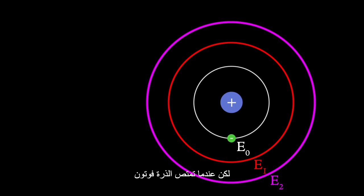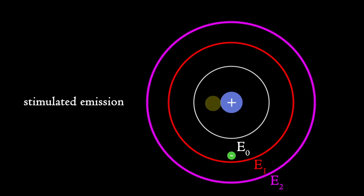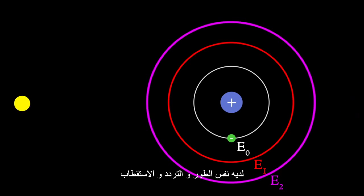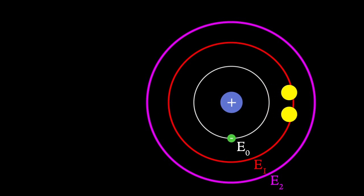But when an atom absorbs a photon and after a short time another photon is absorbed, a stimulated emission will be the result. The newly created photon has the same phase, frequency, polarization, and direction as the second photon. So it's a copy.